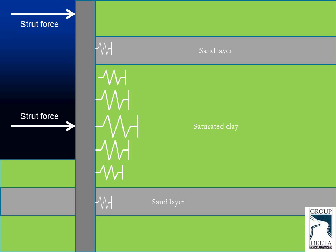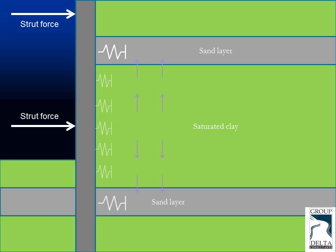As time progresses, the water from the saturated clay is going to be pushed out, and the pore pressures are going to dissipate as the water flows into the more permeable sand layers. What this means is that, relatively speaking, the saturated clay will become softer, and the sand layers will be comparatively much stiffer.